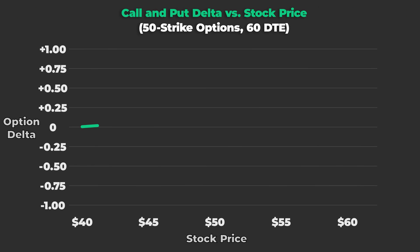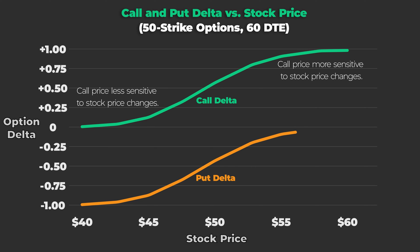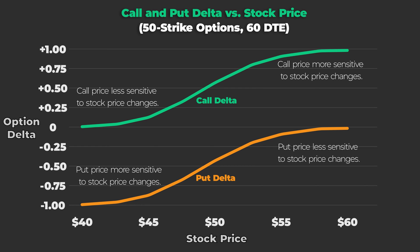If you own a call option and the stock price increases, your new call option Delta is going to be higher than it was before, and therefore your option's price will be more sensitive to changes in the stock price. Conversely, if you own a call option and the stock price falls, your call option will become less sensitive to changes in the stock price. The opposite is true for put options: a put option's Delta will get closer to negative 1 as the stock price falls, making its price more sensitive to stock price changes, while if the stock price increases, put option Deltas will move towards 0, becoming less sensitive.